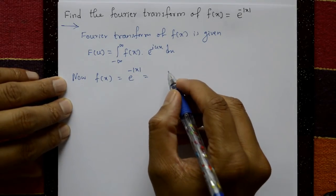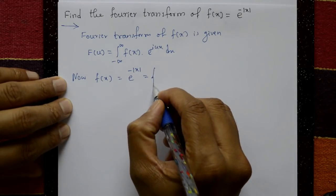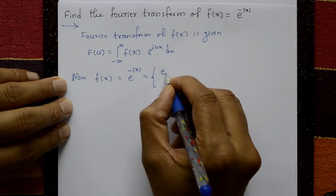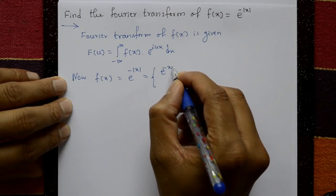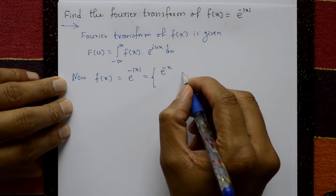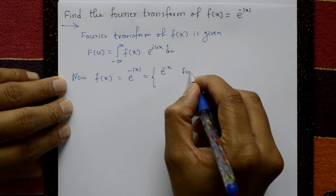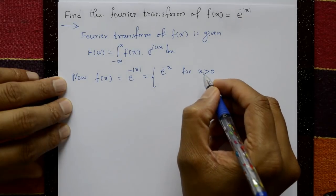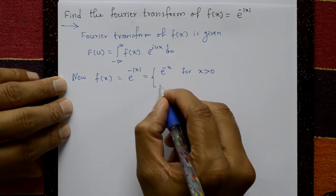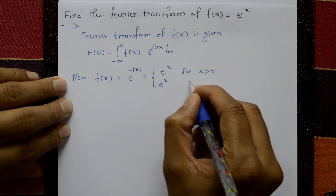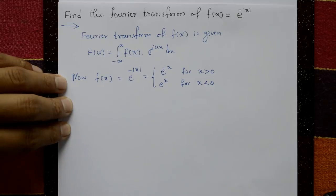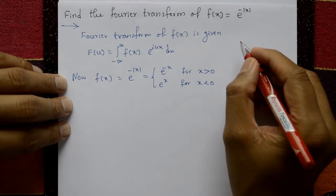Mod means plus or minus. So this is e to the power minus x for x greater than 0, and e raised to x for x less than 0. It is like this.